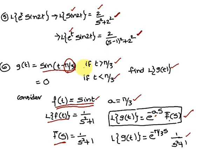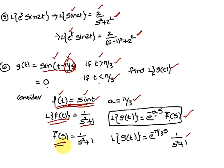Second shifting theorem: given g(t) = sin(t - π/3) for t > π/3, find Laplace of g(t). Consider f(t) = sin(t), since the function is in terms of sin, and a = π/3. Applying Laplace to both sides: Laplace of f(t) = Laplace of sin(t) = 1/(s² + 1). So f̄(s) = 1/(s² + 1).